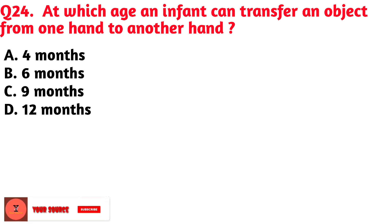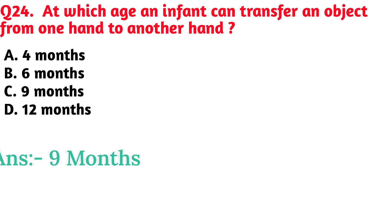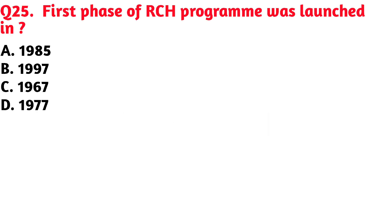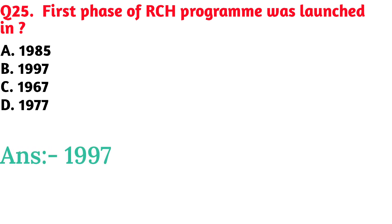At which age can an infant transfer an object from one hand to another hand? Option C, nine months, is the correct answer. First phase of RCH program was launched in — Option B, 1997, is the correct answer.